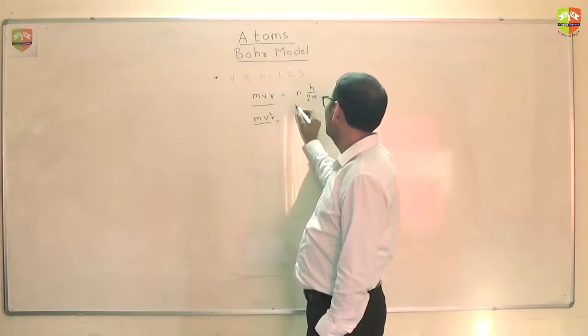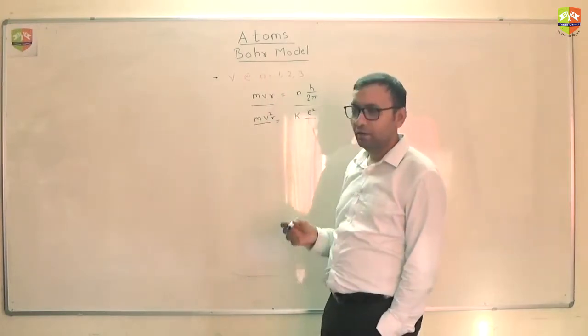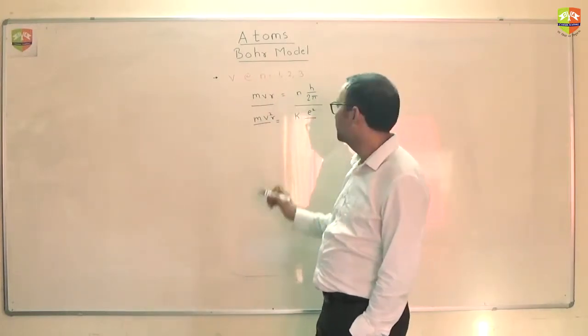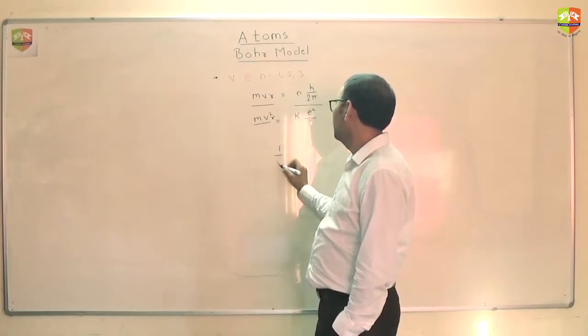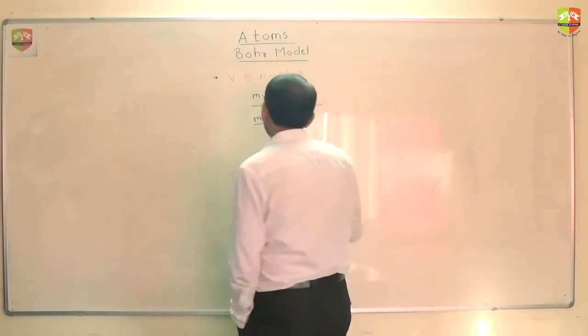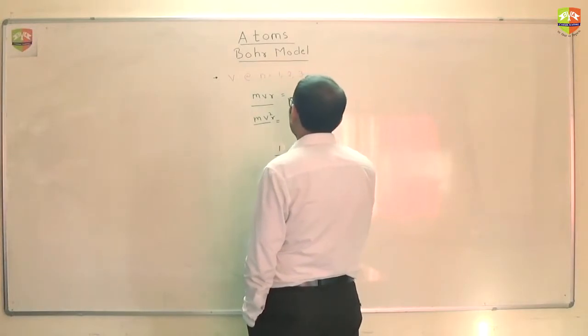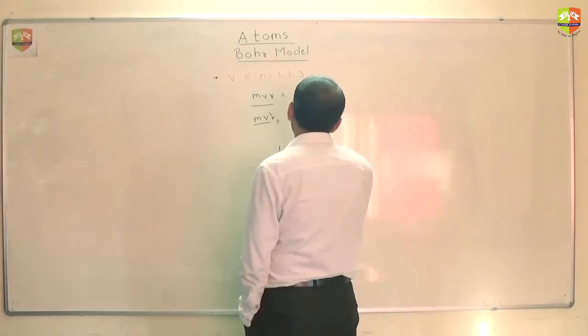And then when you divide, r will go away. So you will get 1 by v is equal to 1 by v is nh by 2π divided by k times e².